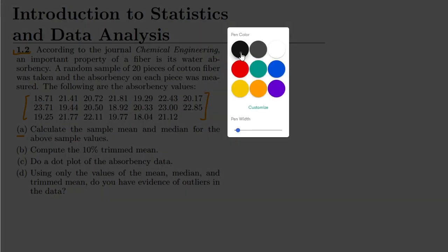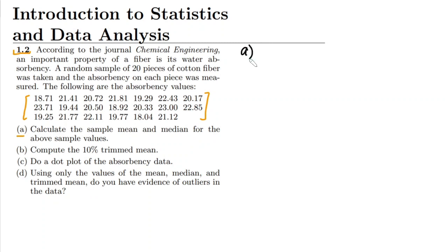The questions in part (a): we have to calculate the sample mean and median for the above sample values. So let me start part (a) here. In order to find the sample mean, the mean will be the sum of all data divided by the number of data points. We have 20 data points.